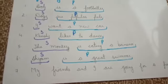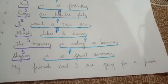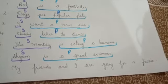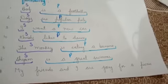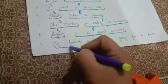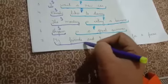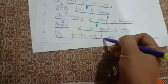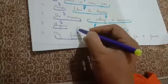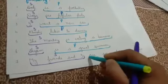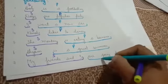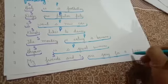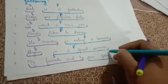'My friends and I are going for a picnic.' Here the sentence is talking about my friends and I. So 'my friends and I' is the subject, and 'are going for a picnic' is the predicate.